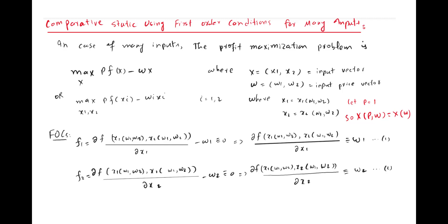In the previous lecture video we discussed the comparative statics of a profit maximizing firm where the firm is hiring only one factor input. But in this case we assume that the firm is hiring more than one input — specifically two factor inputs — and we will see what happens to the profit maximizing behavior of the firm. So again we are discussing the comparative statics in the case of more than one factor input.